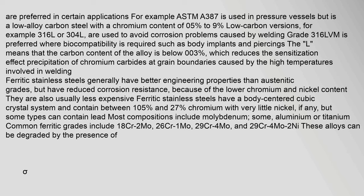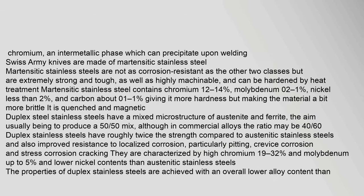Ferritic stainless steels generally have better engineering properties than austenitic grades but have reduced corrosion resistance because of lower chromium and nickel content. They are also usually less expensive. Ferritic stainless steels have a body-centered cubic crystal structure and contain between 10.5% and 27% chromium with very little nickel. Common ferritic grades include 18Cr-2Mo, 26Cr-1Mo, 29Cr-4Mo, and 29Cr-4Mo-2Ni. These alloys can be degraded by the presence of chromium intermetallic phases which can precipitate upon welding.